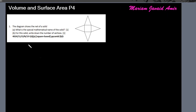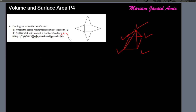Part B says: for this solid, write down the number of vertices. Vertices are the corners of the shape once it's closed. So once you close this pyramid, you'll get a shape — and how many corners will this shape have? One, two, three, four, five. So the answer is five.